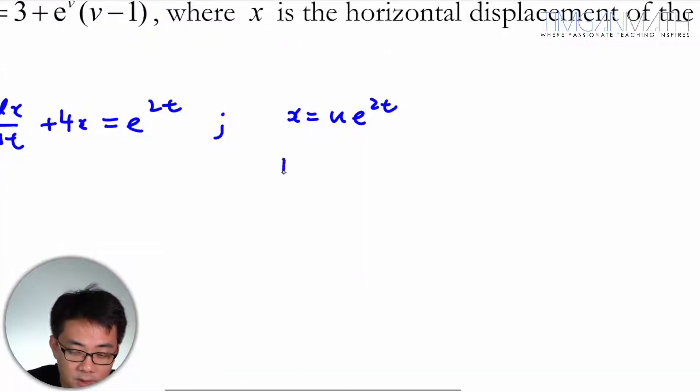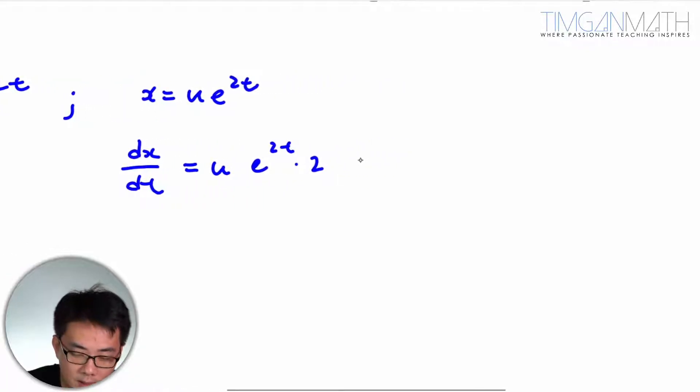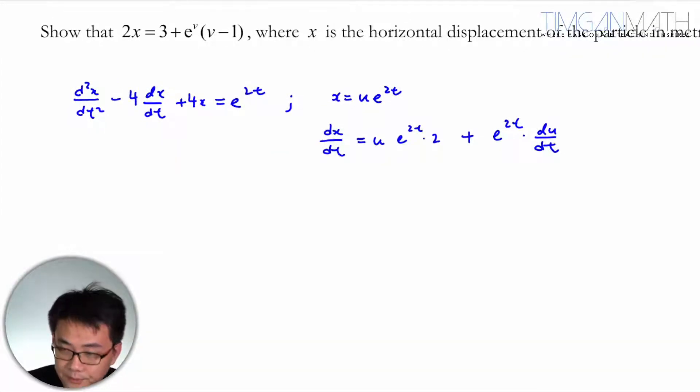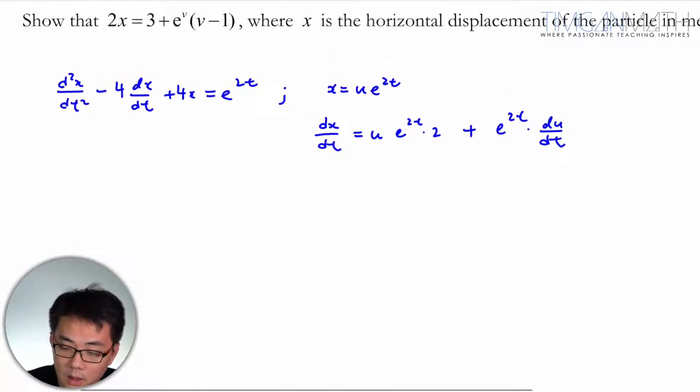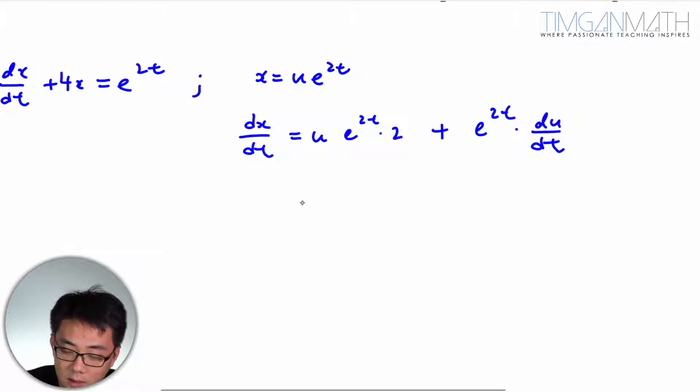Differentiate with respect to t to get dx/dt. Using the product rule, since u is not a constant, we get ue^(2t) · 2 plus e^(2t) · du/dt. So dx/dt = e^(2t)(2u + du/dt).